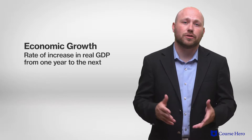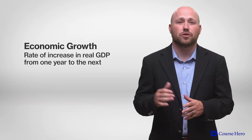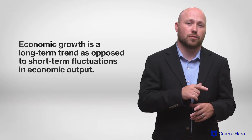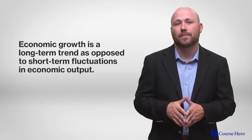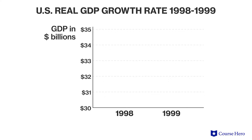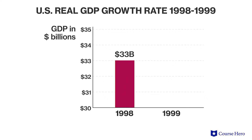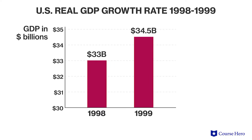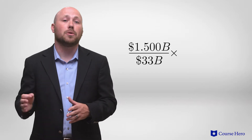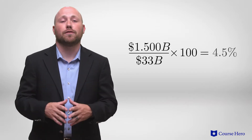Economic growth is the rate of increase in real GDP from one year to the next. It occurs when a nation's GDP rises over time and is a long-term trend as opposed to short-term fluctuations in economic output. It is generally measured as the growth rate of real GDP from one year to the next. For example, if real GDP in the United States increased from $33 billion in 1998 to $34.5 billion in 1999, then it increased by $1.5 billion. The growth rate would be $1.5 billion divided by $33 billion multiplied by 100, which is equal to 4.5%.